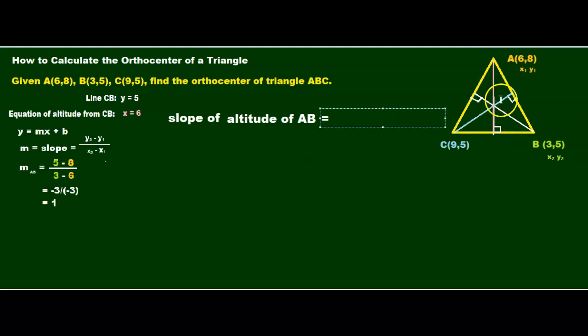That gives me negative 3 over negative 3, which equals 1. Now, we found the slope of AB, which is this slope. But we want to find the altitude, which is the blue line. Now, the altitude is the perpendicular.